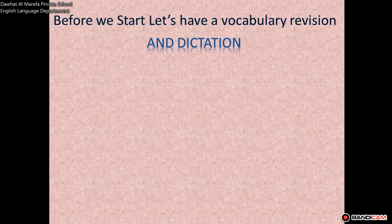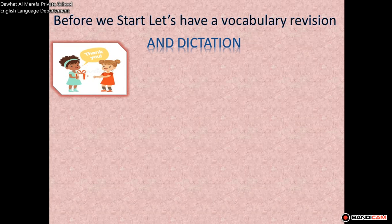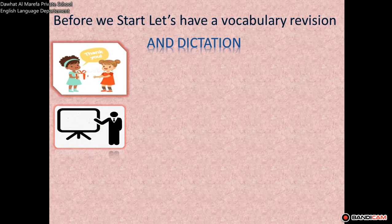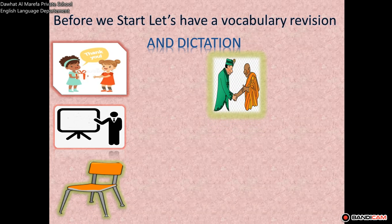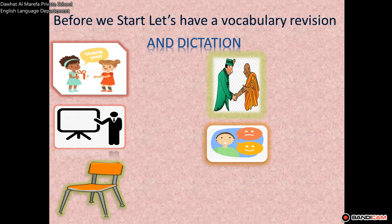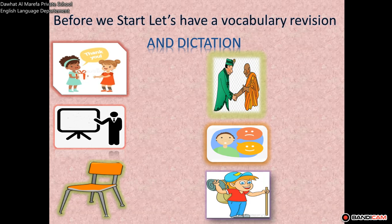Get your copy books and pens ready to write down the dictation words. The words are: manners, rules, seat, respect, feelings, backpacking. Now check the spelling of the words. If you correctly spelled the words, give yourself the stickers — you're awesome!